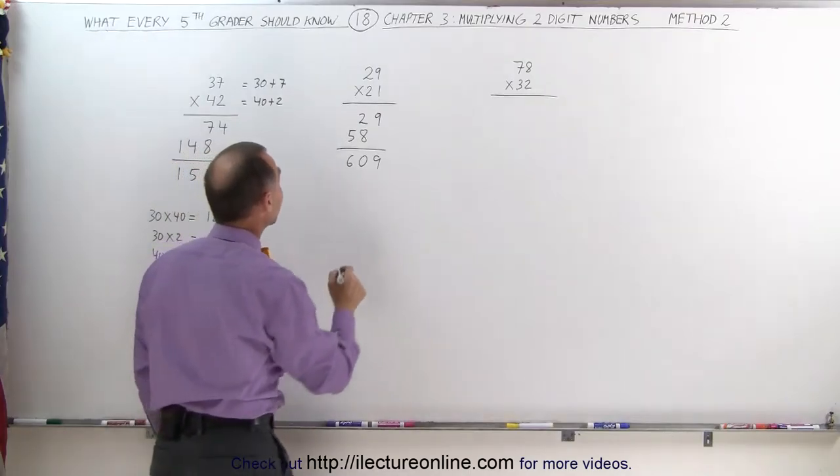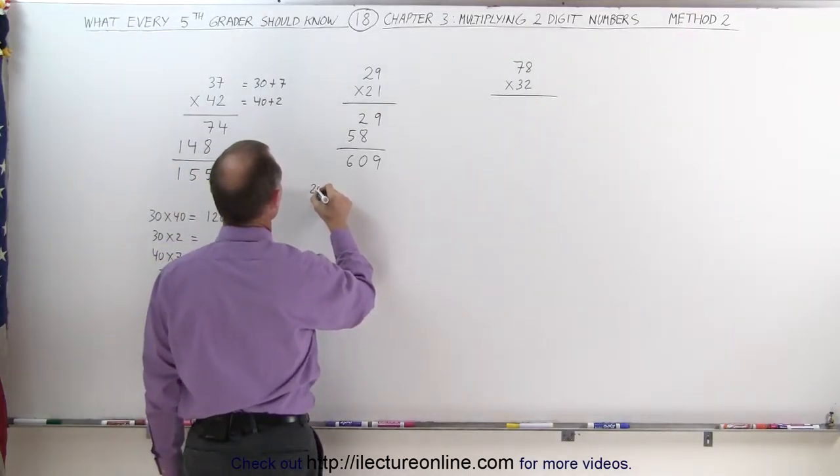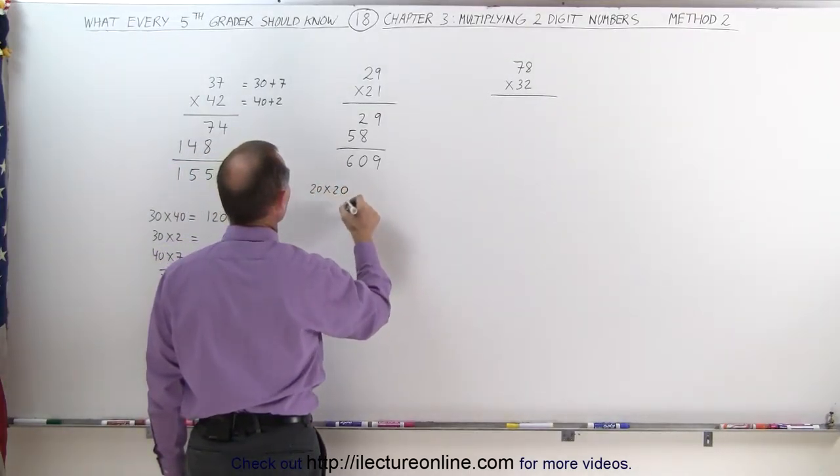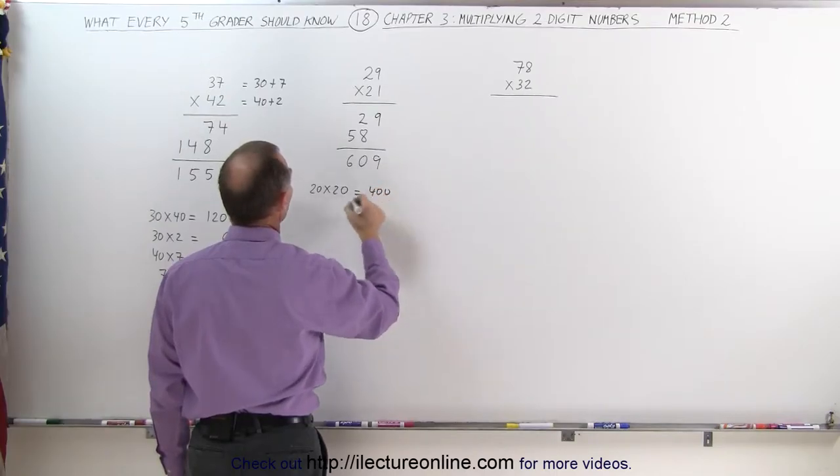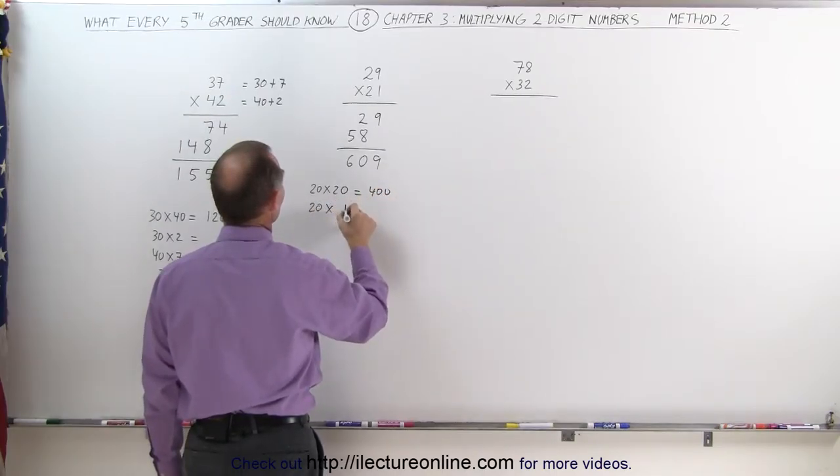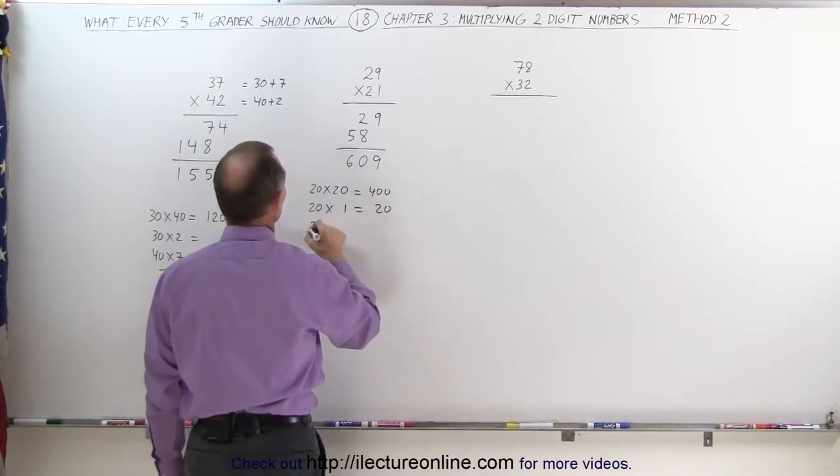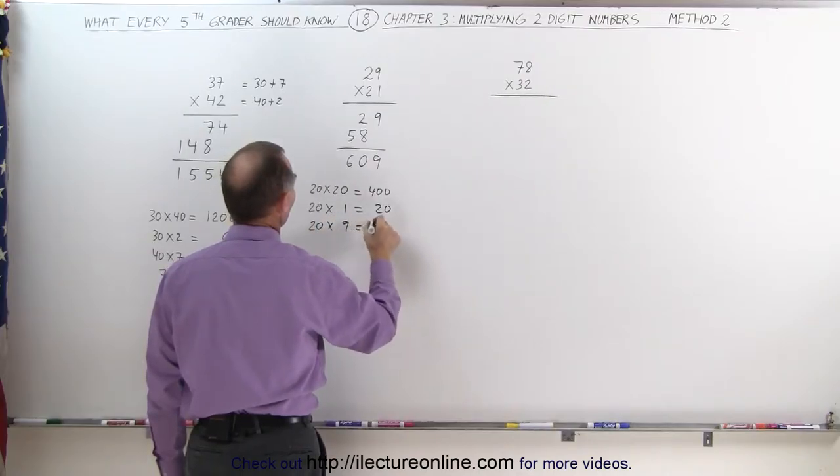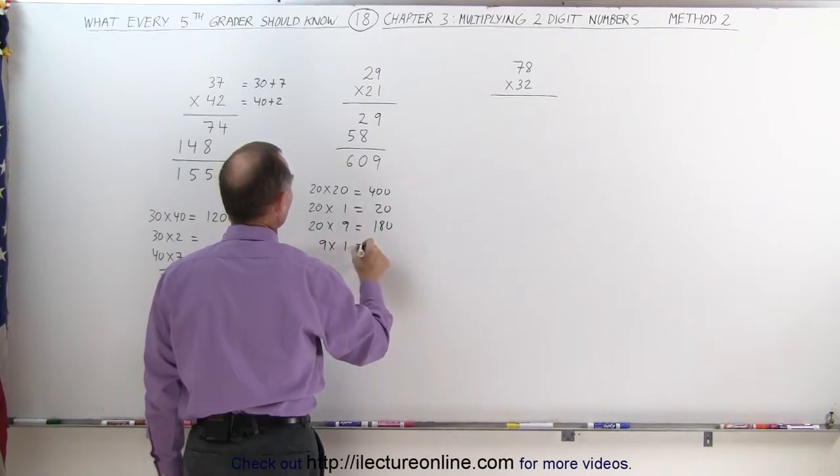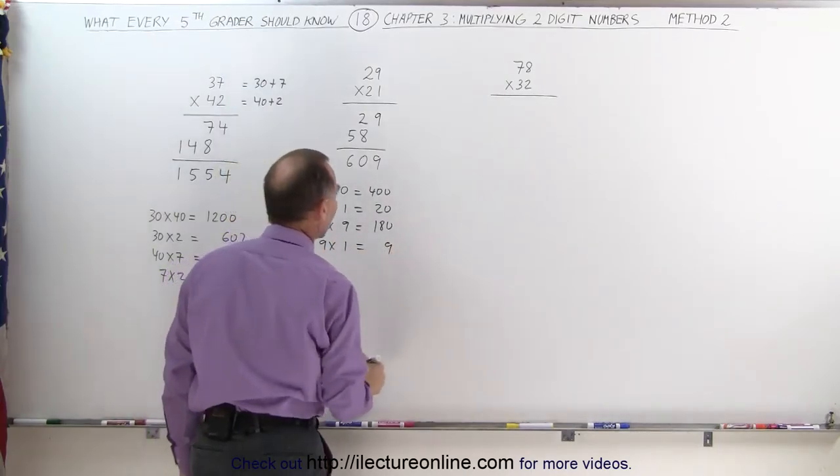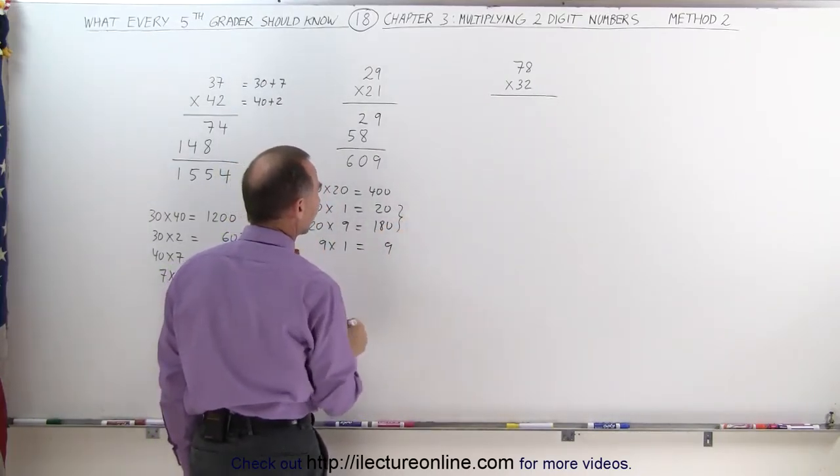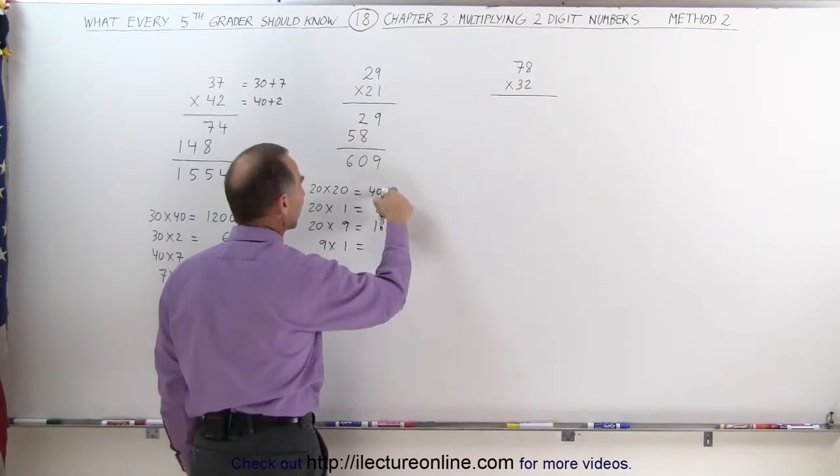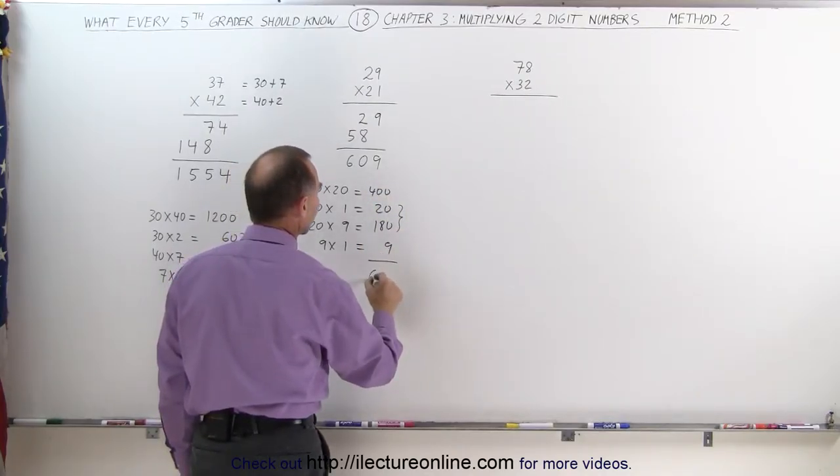But again, we can break it down by saying, this is the same as 20 times 20, which would be 400, 20 times 1, which is 20, 20 times 9, which is 180, and finally, 9 times 1, which is 9. Notice when I add these two together first, I get 200, add to 400, it gives me 600, plus 9 gives me 609.